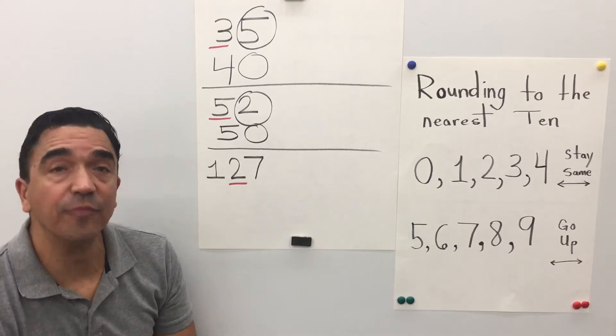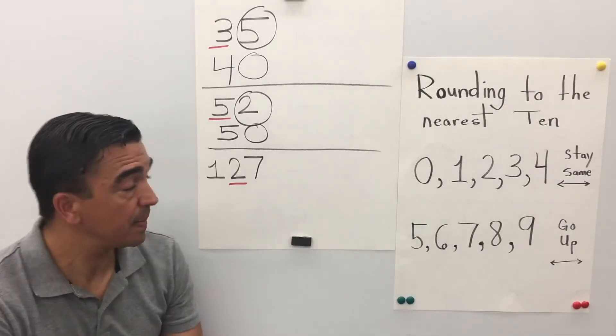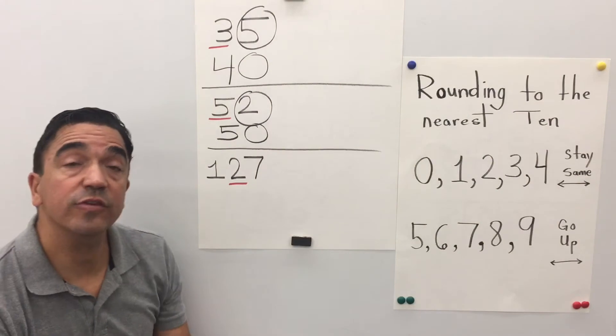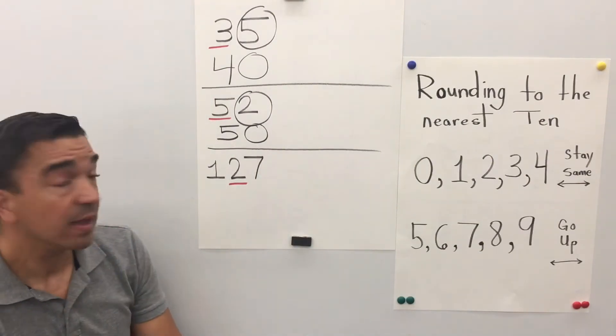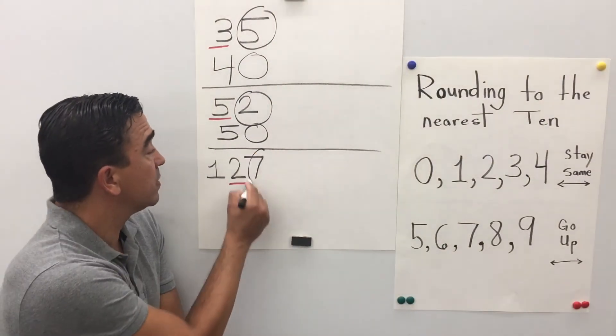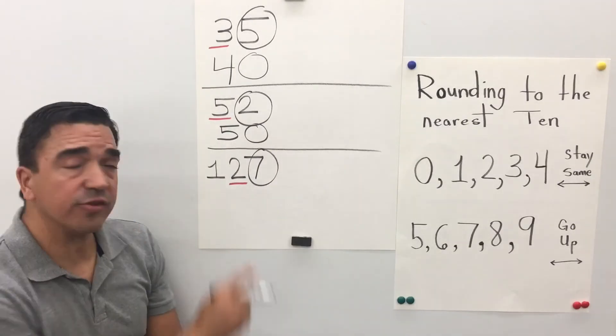Alright. Here's our last problem, 127. The 2 is in the tens place. The 7 in the ones place is going to tell the 2 what to do.